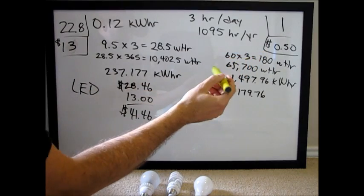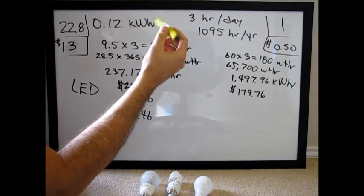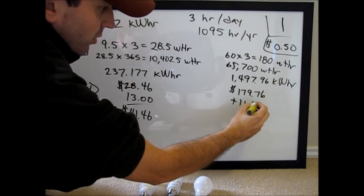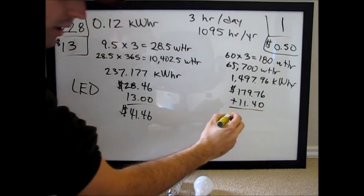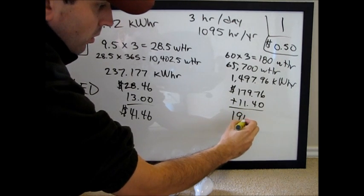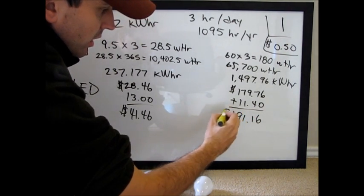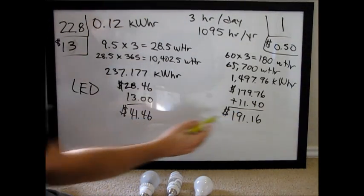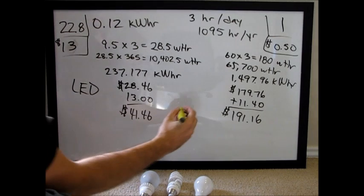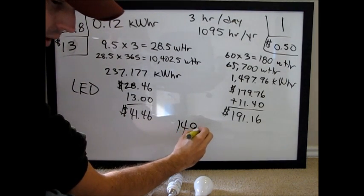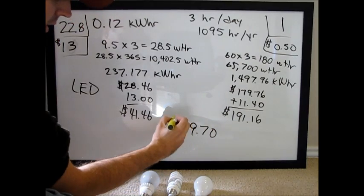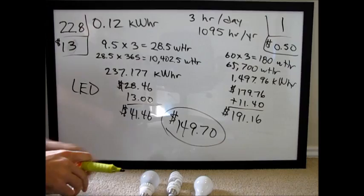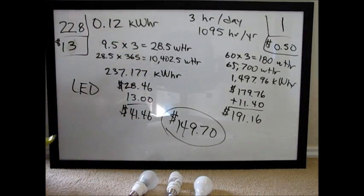Over this course, 22.8 years, you're going to have to buy 22.8 bulbs, which is going to add another $11.40 onto here. So $191.16 is the grand total over here. $191.16 subtracted by $41.46, $149.70 in savings over a 22-year period for LED bulbs over incandescent.